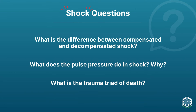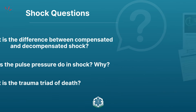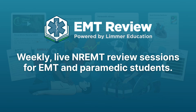The trauma triad of death: hypothermia, acidosis, and coagulopathy. Hypothermia worsens shock; acidosis occurs because of anaerobic metabolism, which ultimately leads to inability of the blood to clot — that's the coagulopathy.